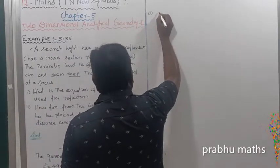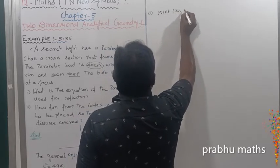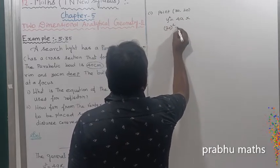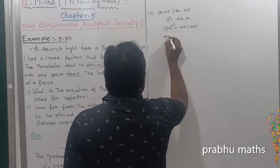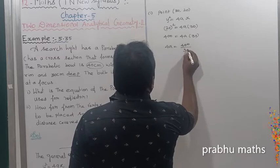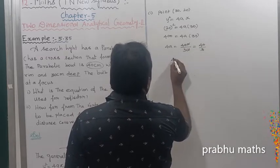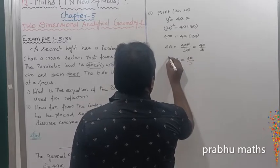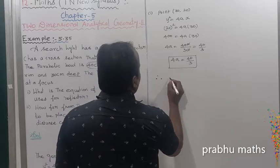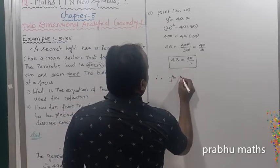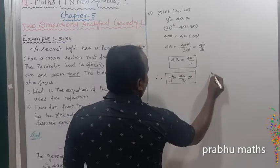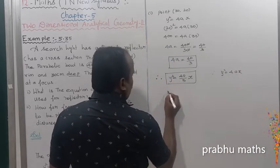For the first question, using the point (30, 20): y² = 4ax, so substituting y = 20, we get 20² = 4a × 30, which gives 400 = 4a × 30. Therefore 4a = 400/30 = 40/3. So the equation is y² = (40/3)x.